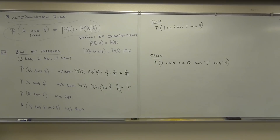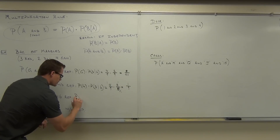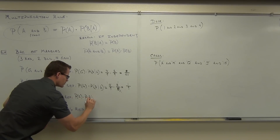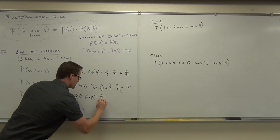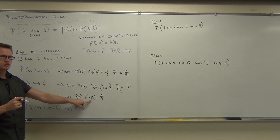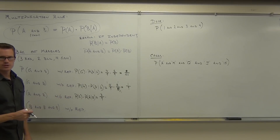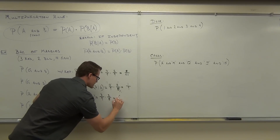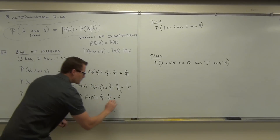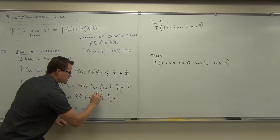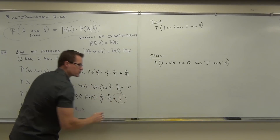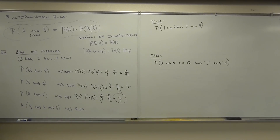Probability of selecting red and red without replacement: you have 3 reds out of 9 total, so 3/9 times 2/8 (after removing one red, 2 reds remain out of 8 marbles). Simplifying: 3/9 times 2/8 reduces to 1/12. You have a one-twelfth probability of selecting a red marble and then another red marble.